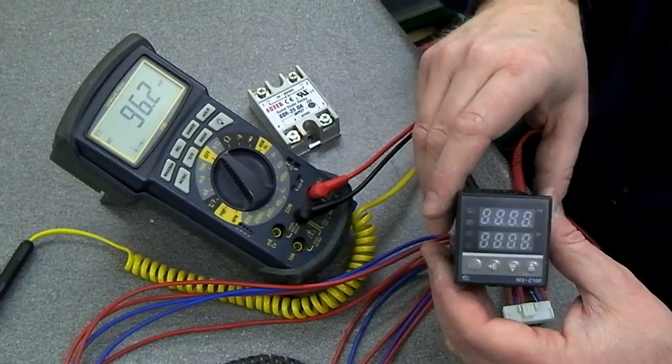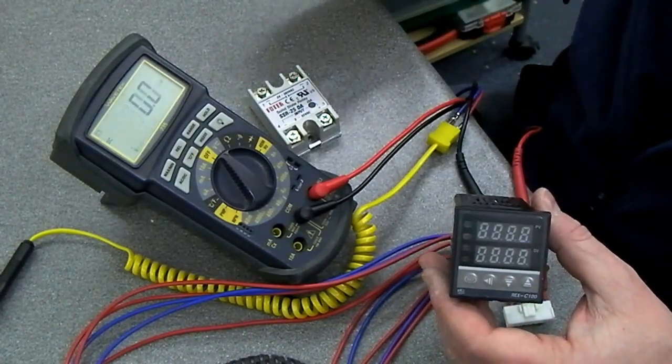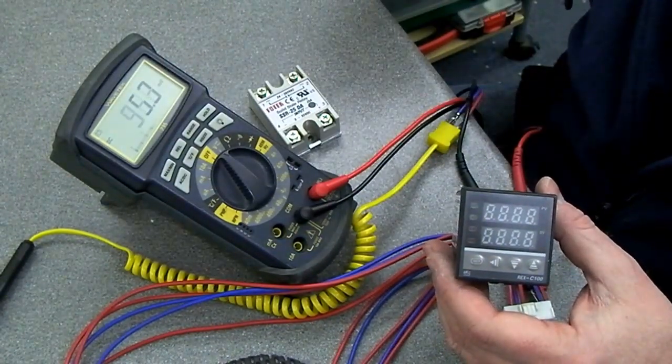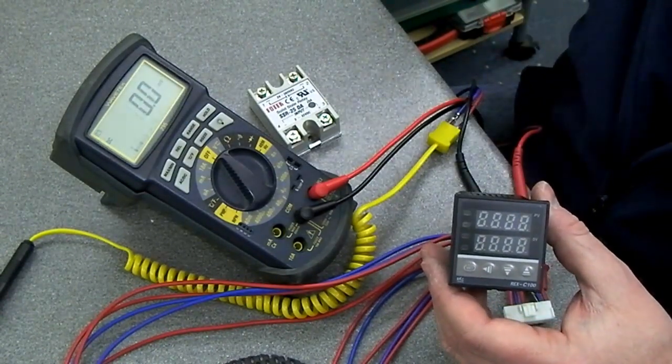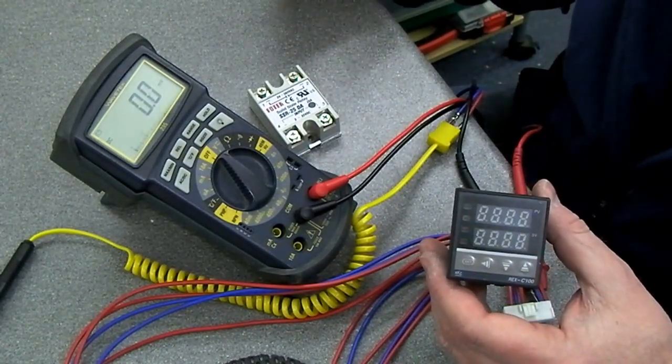So if we fire this up what should happen is you'll see the set value of 200 and the temperature here is probably 8 or 9 degrees something like that.